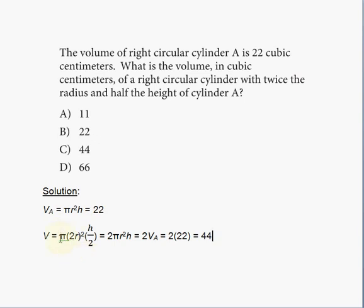So as a result I have π times 2r, and this thing is squared, because this is the new radius, times h over 2. And that's the new height. Okay? Now, all you need to do now is to simplify.